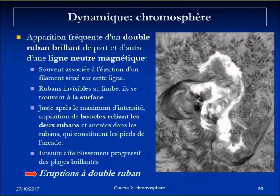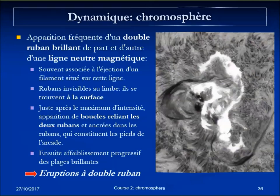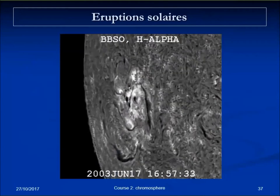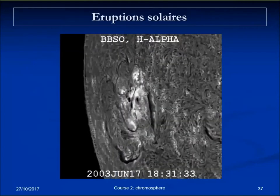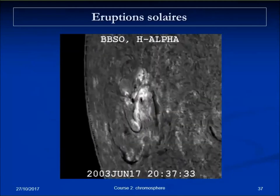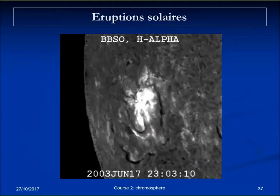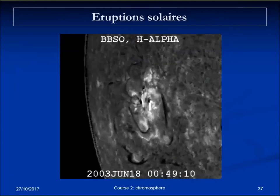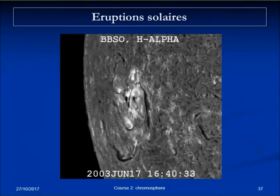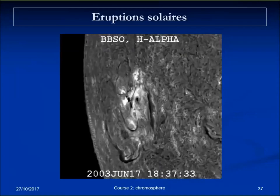Often you see bright arcades forming and bridging the gap between the two ribbons, which seen at the limb have no vertical extension — those bright patches are really at the base of the chromosphere. In a movie of a flaring region showing two sunspots and a filament indicating a neutral line, suddenly two bright ribbons appear and the filament has vanished — showing magnetic reconnection and complete disruption of the pre-existing magnetic structure.